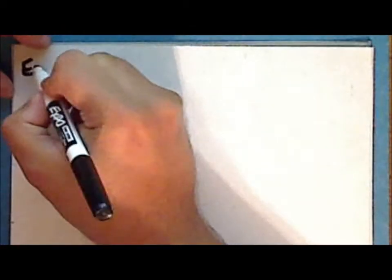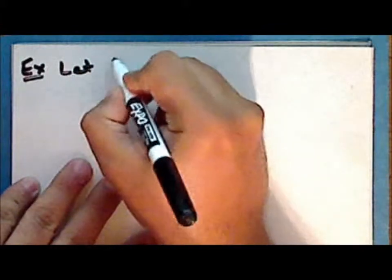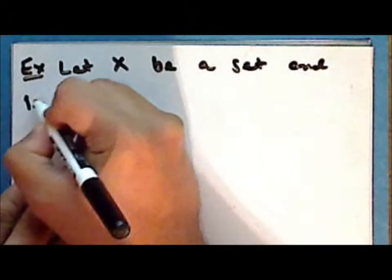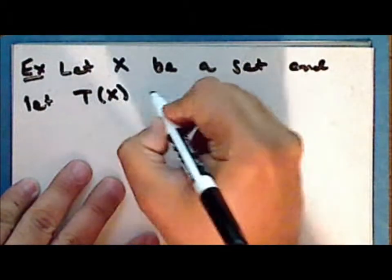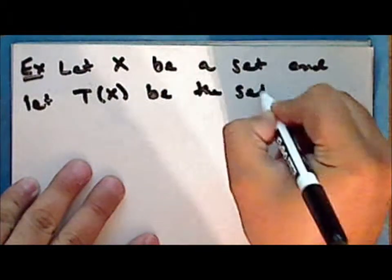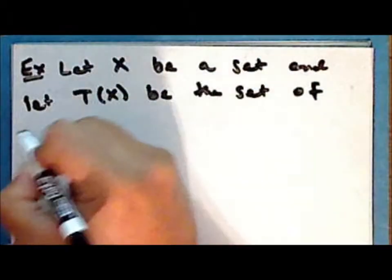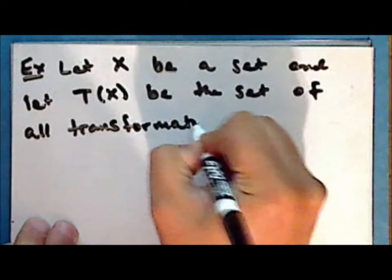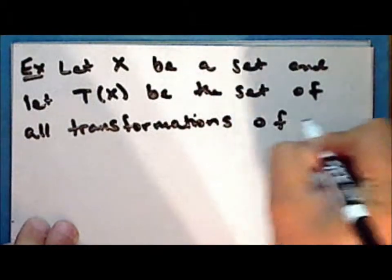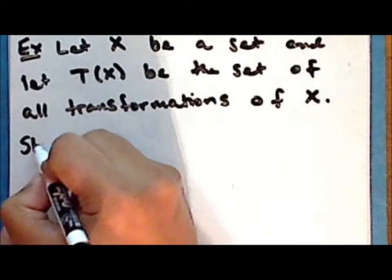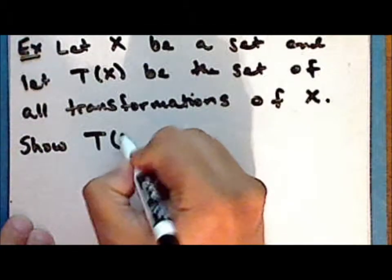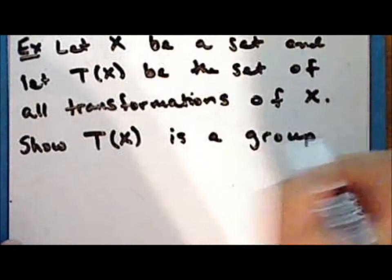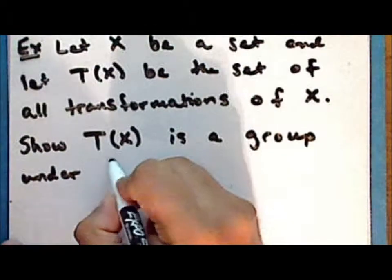As an exercise, let X be a set and let T(X) be the set of all transformations of the set X. Show that the set of all transformations on the set X is a group under function composition.